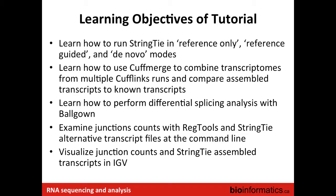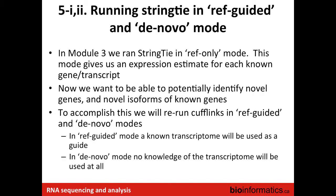We're going to examine some junction counts with a helper tool called RegTools, and then look at junction splicing output files in IGV along with the StringTie assembled transcripts. So how do we run StringTie in reference-guided and de novo modes? Basically we're going to take advantage of some additional options.